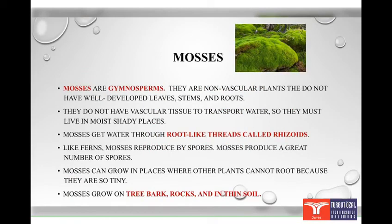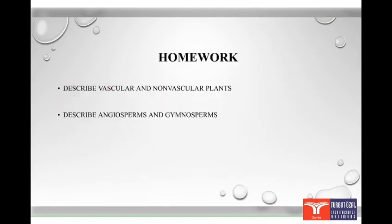Mosses are non-vascular plants. They do not have well-developed leaves, stems and roots. They do not have vascular tissue to transport water, so they must live in moist, shady places. Mosses get water through root-like structures called rhizoids. Like ferns, mosses reproduce by spores. They produce a great number of spores. Mosses can grow in places where other plants cannot because their roots are so tiny. Mosses grow on tree bark, rocks and in thin soil.